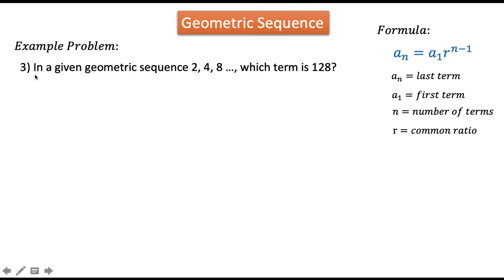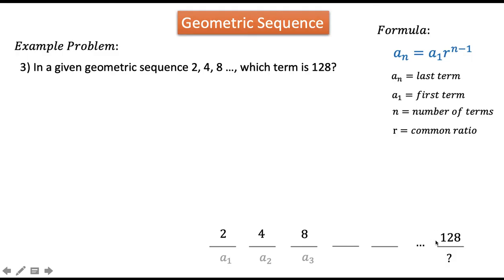In our last example, given the geometric sequence 2, 4, and so on, which term is 128? The first few terms are given, and 128 is also a term, but we don't know its position. We need to find n. Our a sub 1 is 2, the common ratio r is 2 (since 4 divided by 2 is 2, or 8 divided by 4 is 2), n is unknown, and our a sub n is 128.